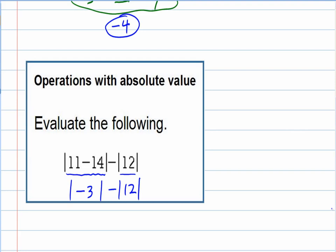But, now that we've done that, the next step would be to drop those absolute values, to figure out what the absolute value of negative 3 is. 3. To figure out what the absolute value of 12 is. 12. Absolute values making whatever is inside positive.